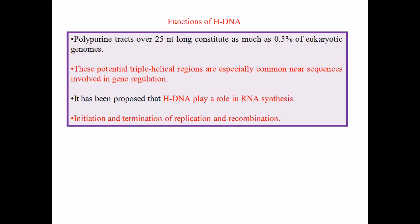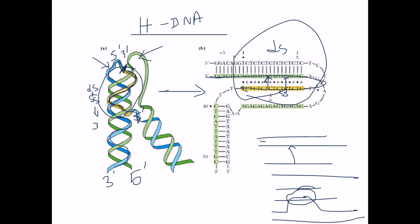Regarding the functions of H-DNA: most of the time this kind of DNA is formed due to the presence of repeated sequences, like AG AG AG AG with CT CT CT CT — polypurine sequences. Three key requirements: first, it involves intra-strand interaction; second, a bend must occur to make this structure; third, it is not found throughout the whole DNA but only in particular stretches.